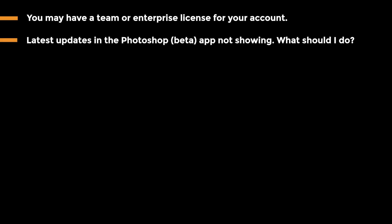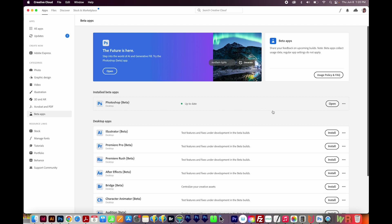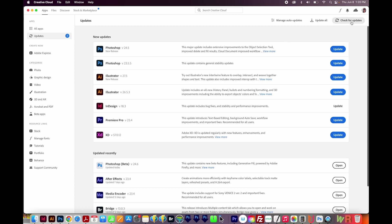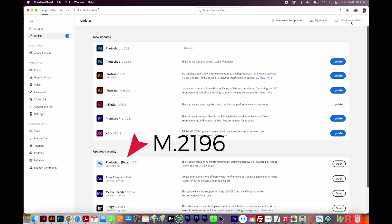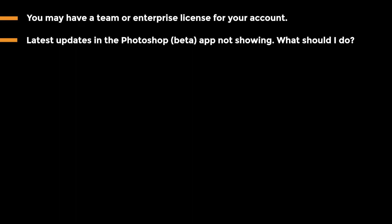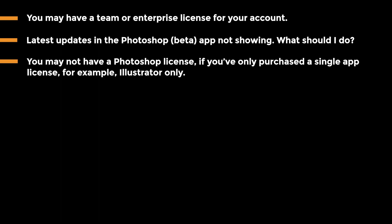If you've tried these things and still can't use it, here are some reasons why. You may have a Team or Enterprise license where the ability to download Beta Apps has not been enabled for you personally. In that case, contact the admin for that license and check if they can enable Beta Apps for you. If you're not seeing the latest updates in the Photoshop Beta App, go to Updates in Creative Cloud and check for updates. You'll want to update to Build M.2196 or later.